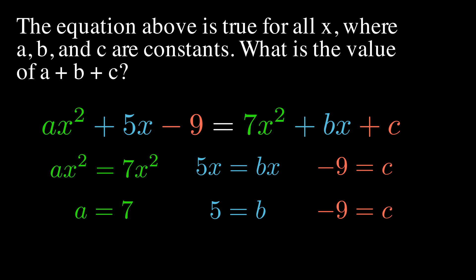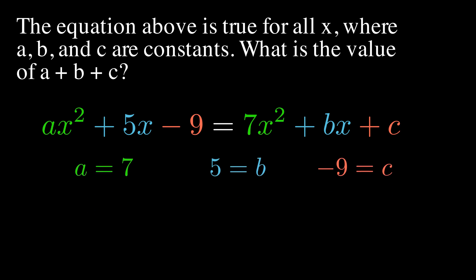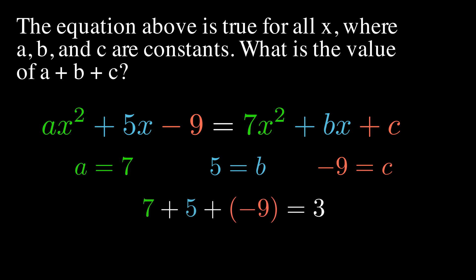Once we've identified what A, B, and C are, all we've got to do is find A plus B plus C. So I'm just going to add them: 7 plus 5 plus negative 9. When I do that, I'm going to find that my answer is 3.